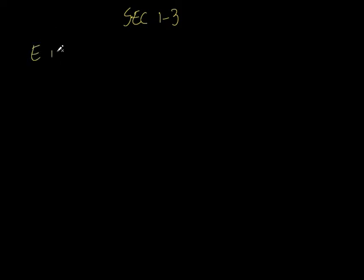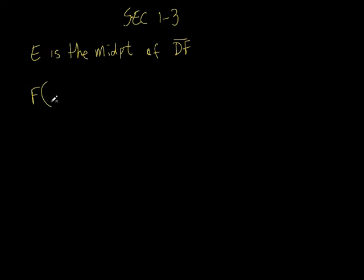So they say that E is the midpoint of line segment DF. That's what they tell you right at the beginning — that's the instructions. And here's the problem. They give you point F, which is (2, 9), and they give you point E, which is (-1, 6). What do you think they're asking for then? The other endpoint — what would the other endpoint be? They give you point F, so what's the other endpoint? D.